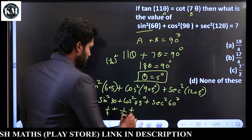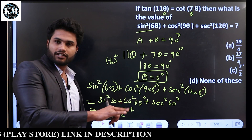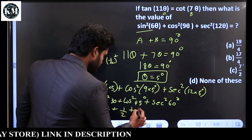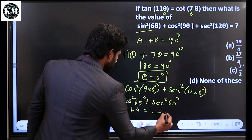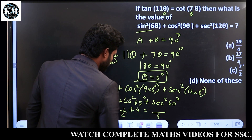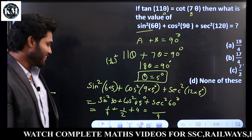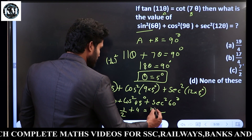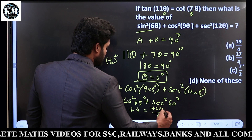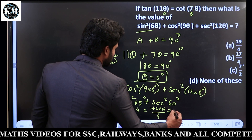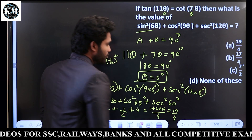Sec squared is 4. The LCM of 4, 2, and 1 is 4. So: 1 plus 2 plus 16 — the answer is 19 by 4. It is easy.